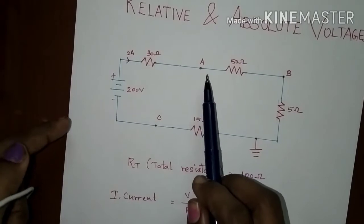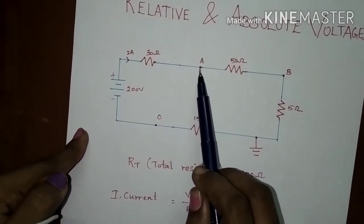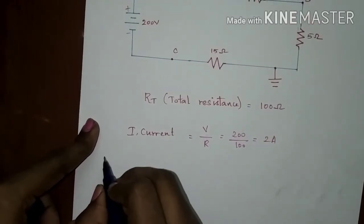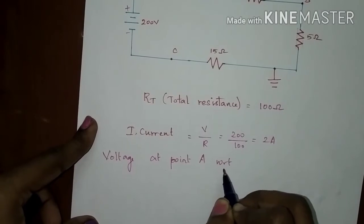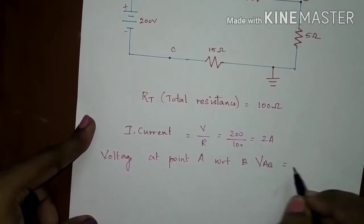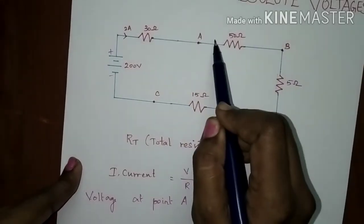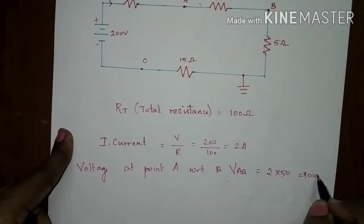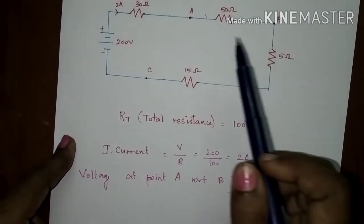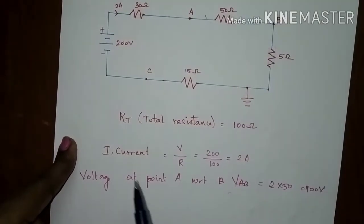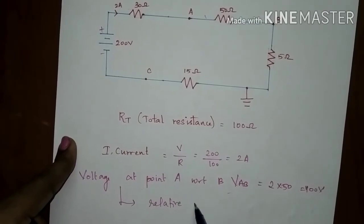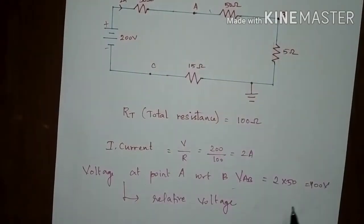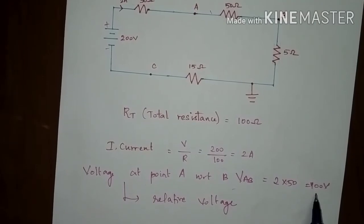If the voltage at point A is quoted with reference to point B, then the voltage can be written as VAB. This voltage VAB can be found by the current flowing through that resistance value: 2 into 50 gives 100 volts. This voltage at point A with respect to point B is termed as a relative voltage. In the circuit shown, VAB is equal to 100 volts.